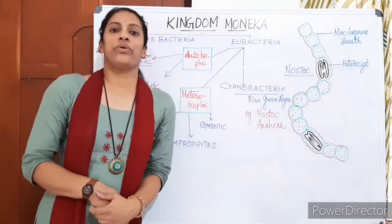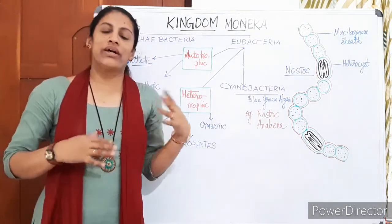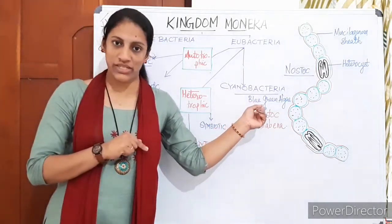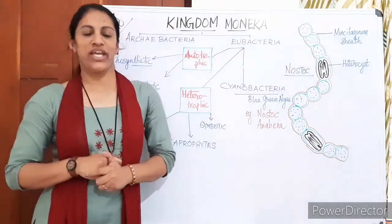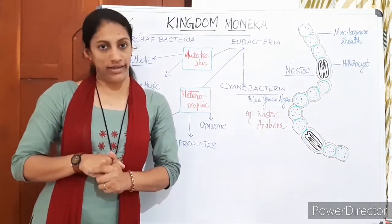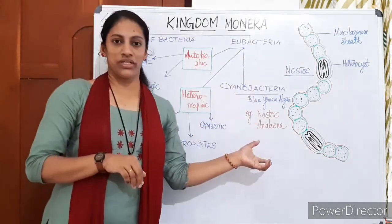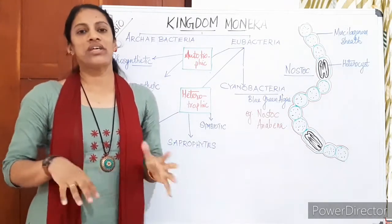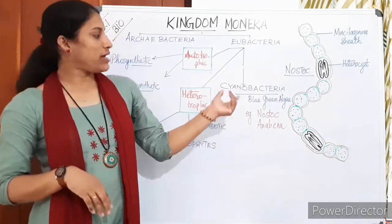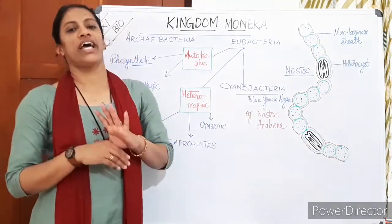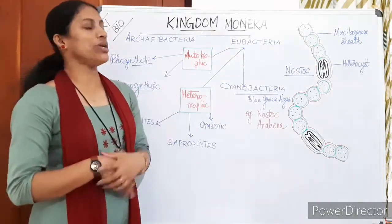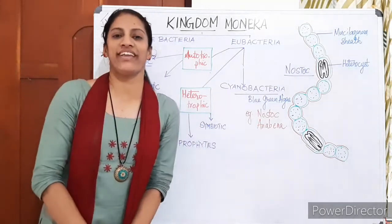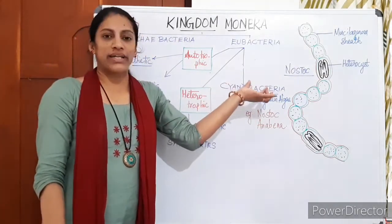The first group is cyanobacteria. These members were earlier placed under Plantae and are also known by the previous name blue-green algae. They were shifted to Kingdom Monera because they have a prokaryotic cell, not a eukaryotic cell like algae. Their cells do not possess a true nucleus, so they belong to Kingdom Monera now.